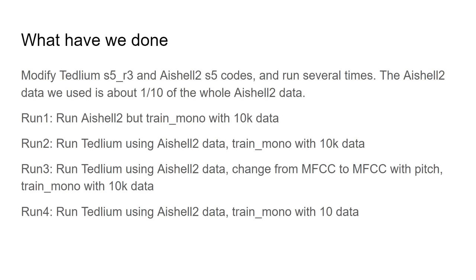What we have done is: first, we modify the dataset of ASL2. We take a subset of the training data, taking 1 over 10 of the utterances of the whole ASL2 data. Then we modify the Tetlium-S5-R3 recipe and the ASL2-S5 recipe. In this case, we created 4 experiments.